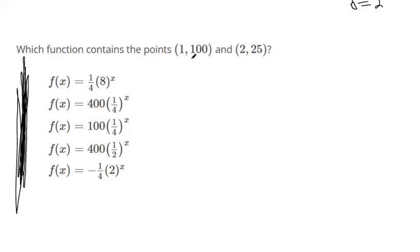Which function contains these points? You can find out by just plugging in the points into each function. If there's an easier way, I don't know. But if we plug in 1 in for x into this function, 8 to the first is 8. 8 times 1 fourth is 2. So we know it's not going to be that one.